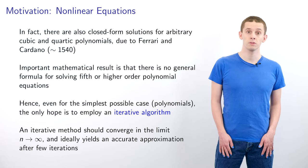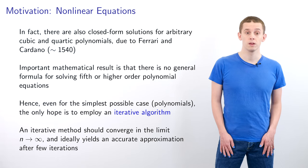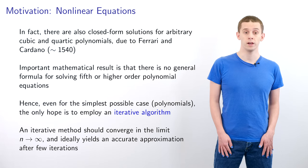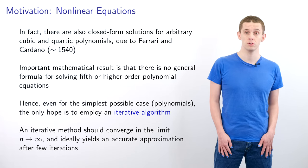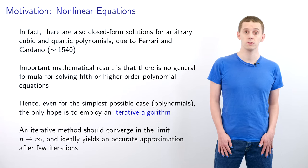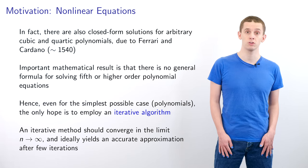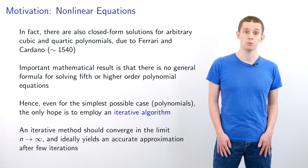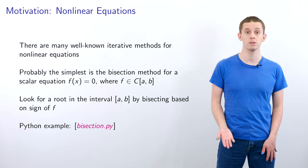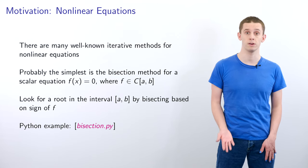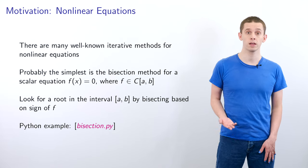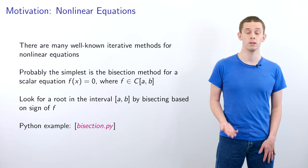But there's a very interesting and surprising mathematical fact that there is no general closed form solution for any polynomial of fifth order or higher. Hence even for the simplest possible case of polynomials the only hope is to employ a numerical method and typically an iterative approach that will converge to a solution as the number of iterations n tends to infinity. And ideally for a good method we'd like to have an accurate approximation to our solution after a few iterations. There are many well-known iterative methods for solving non-linear equations and perhaps the simplest is the bisection method for solving the scalar equation f of x equals 0 where f is a continuous function on the interval from a to b. And we'll now take a look at a Python example bisection.py that implements this method.